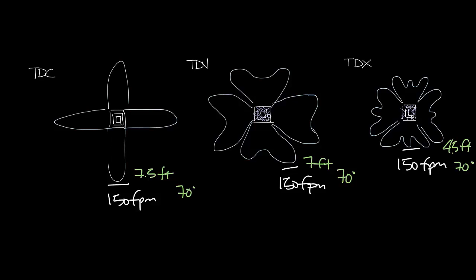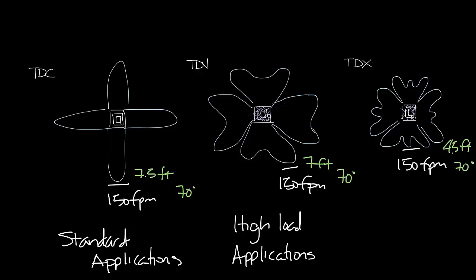So if you look at applications the TDC is used in standard applications. We see it in a lot of offices. The TDV are for higher load or maybe you want to get more spread out of your diffuser. And then the TDX would be used for high load spaces or for cold air systems.